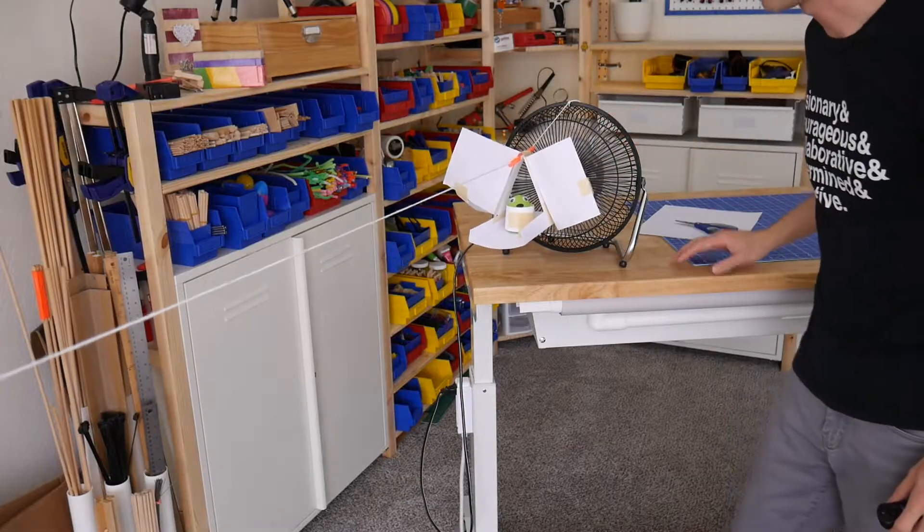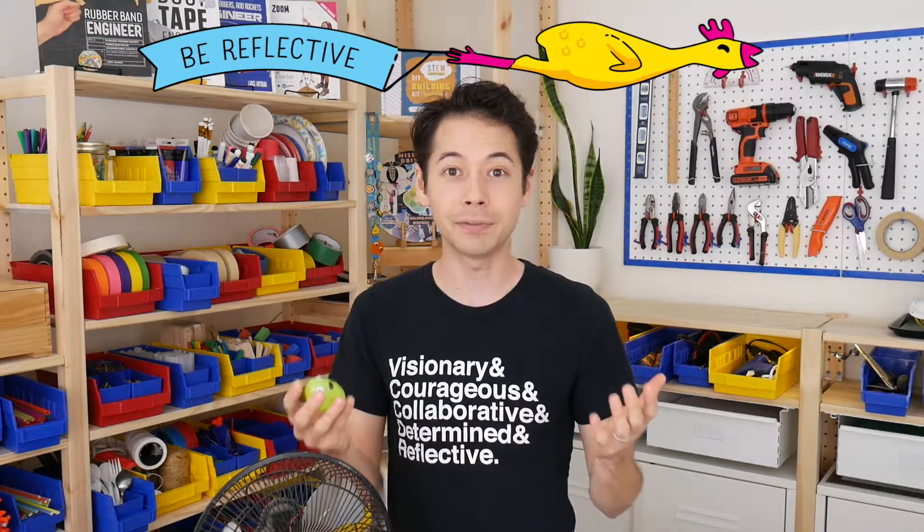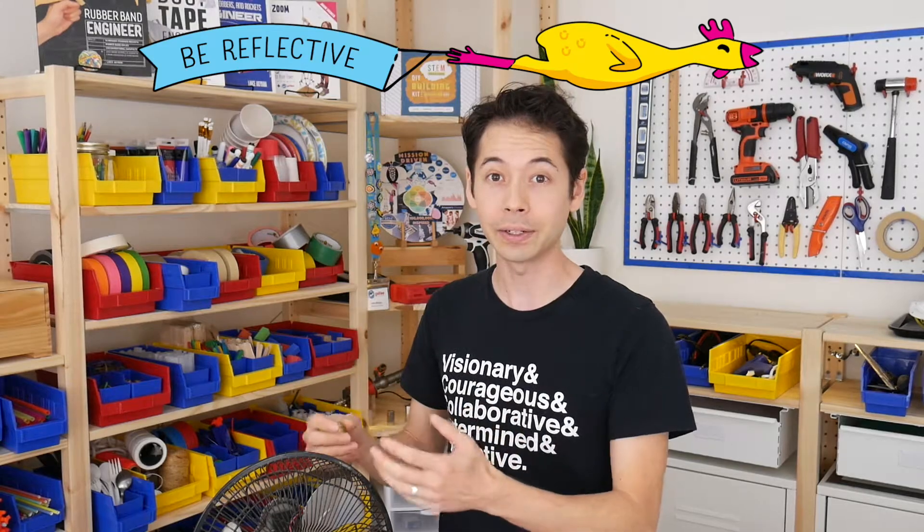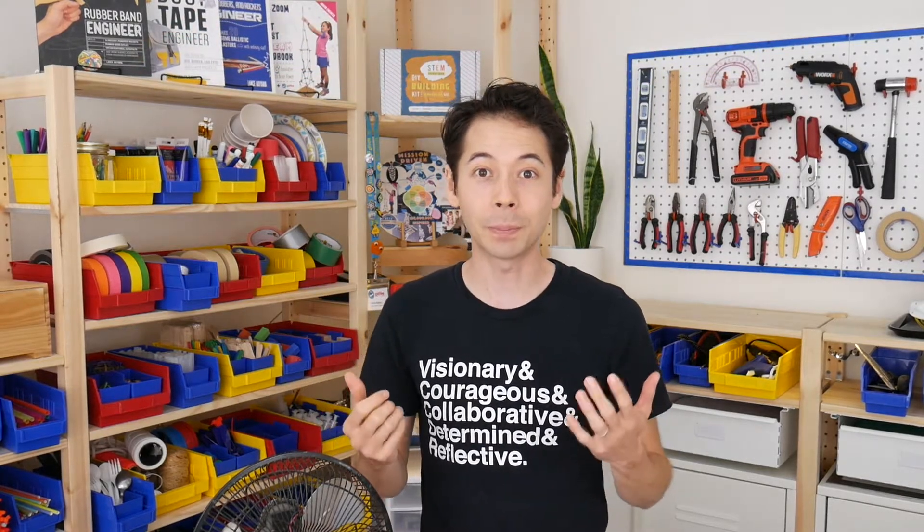And the goal here is to get the carrier to zip along the zipline as far as possible. And to do this it'll help to be reflective by noticing how the carrier's sails are or aren't catching the wind and then redesigning it to make it go as far as possible. So let's jump right in.